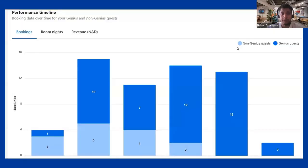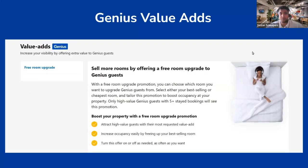If you scroll down on the Genius report page, you get a graphical representation of the proportion of Genius and non-Genius guests who book with you, according to bookings, room nights, and revenue. Lastly, on the Genius side, the Genius value add-ons page gives you the option to opt into a free room upgrade. With this, you can choose a room to upgrade from — either your best-selling or cheapest room — and upgrade guests to your most expensive or luxurious room, to stimulate bookings for that room type.